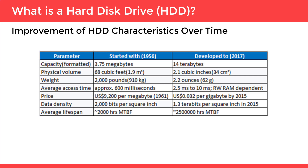Physical volume went from 68 cubic feet (1.9 cubic meters) down to just 2.1 cubic inches (34 cubic centimeters). Weight dropped from 2,000 pounds (around 910 kg) to just 2.2 ounces (62 grams). Average access time went from approximately 600 milliseconds down to just 2.2–10 milliseconds. Price fell from $9,200 per megabyte in 1961 to just $0.32 per gigabyte by 2015.